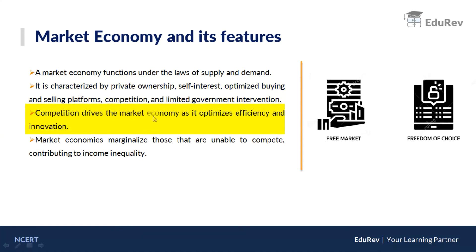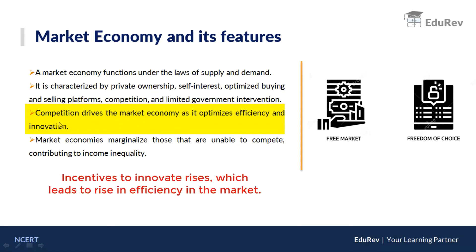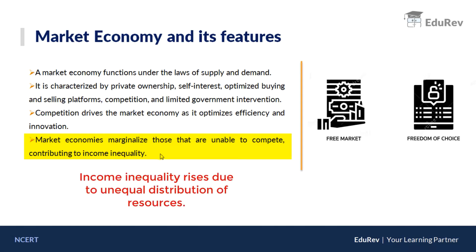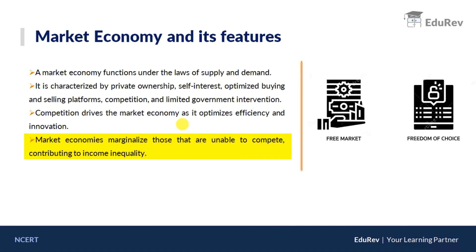Competition drives the market economy as it optimizes efficiency and innovation. Firms know that the fittest will survive, so they try to be the best they can. However, market economies marginalize those who are unable to compete, contributing to income inequality. This is a drawback of the market economy — poor people who cannot earn much are disadvantaged when prices are high. So while the market economy is good for firms and increases efficiency and innovation, it is also discriminatory to the poor.